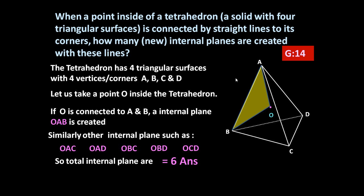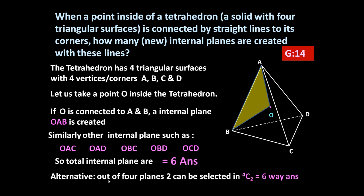This problem can be solved in another way also. There are four planes and four points: A, B, C, and D. Out of four points, two can be selected in 4C2 = 6 ways, confirming the answer is six.